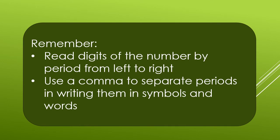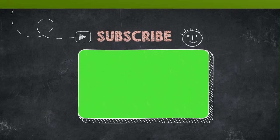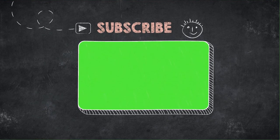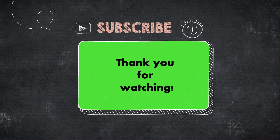Remember, in reading and writing numbers, we read the digits of the number by period from left to right. We also use a comma to separate periods in writing them both in symbols and words. That's all for today. I hope you learned something from this video. Thank you for watching!